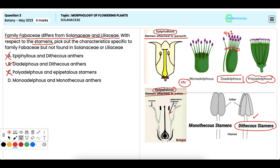Option D: Monadelphous and Monothecous anthers. It is incorrect. Monadelphous condition, that is all stamens united into one bundle, and Monothecous anthers, that is containing only one lobe, are not specific features of Fabaceae.